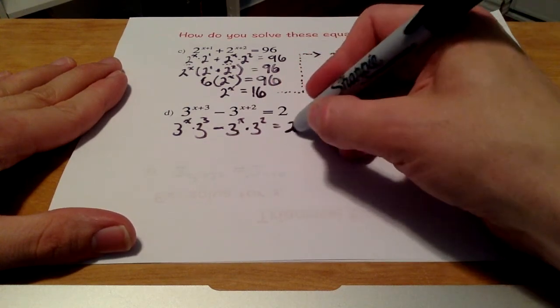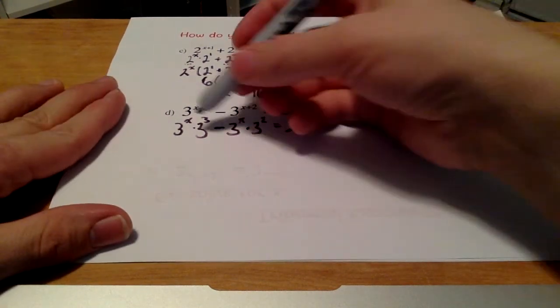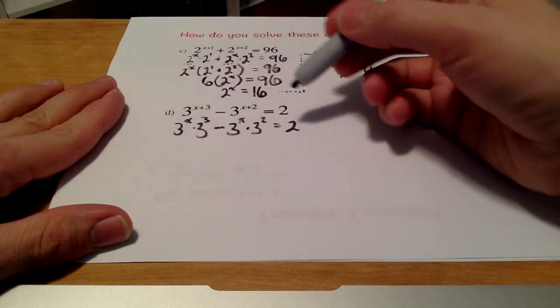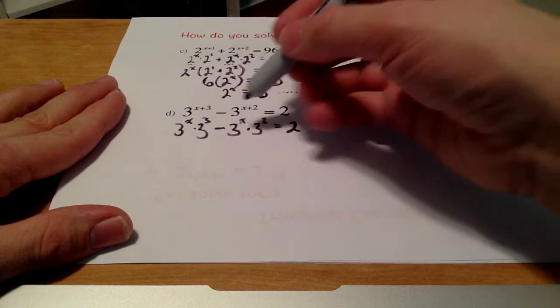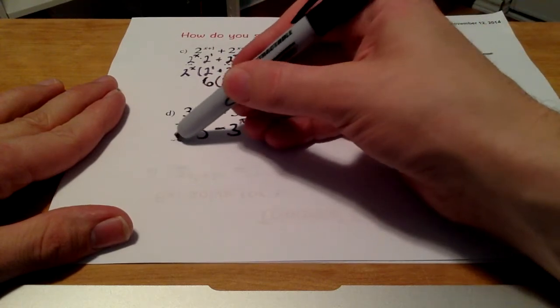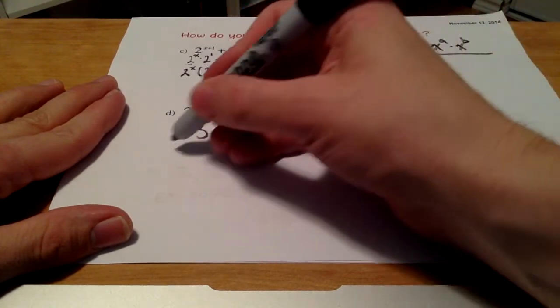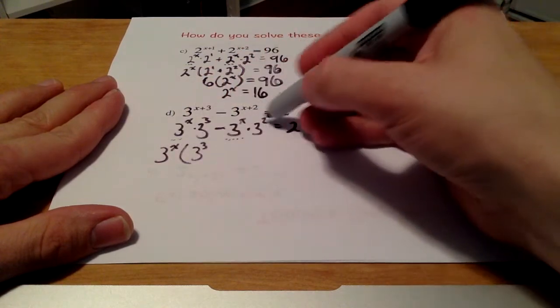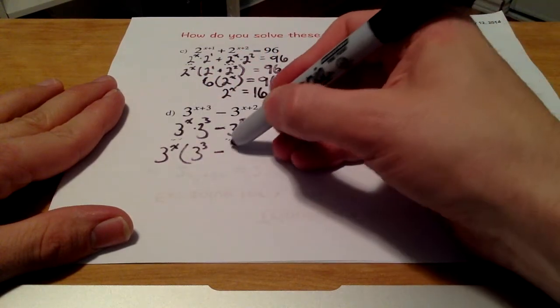So right away, some of you are thinking, well, there's no way I can write 2 as a base of 3. But stuff's definitely going to happen here that's going to help us with that. Remember, I can common factor 3 to the power of x out here. So I'm going to do that. That leaves me with 3 cubed, and I'm still subtracting 3 squared here.